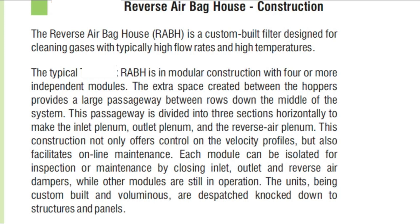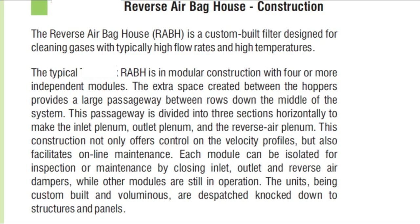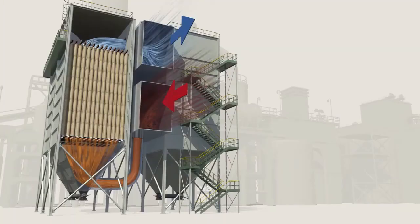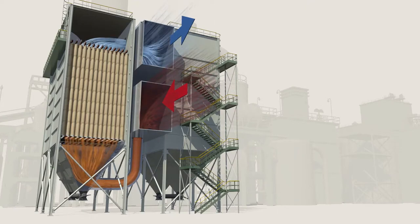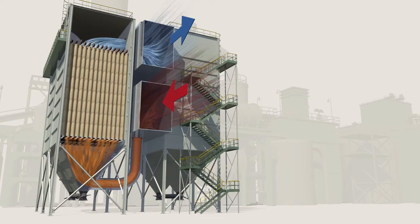This passageway is divided into three sections horizontally to make the inlet plenum, outlet plenum, and reverse air plenum. This construction not only offers control on the velocity profiles but also facilitates online maintenance. Each module can be isolated for inspection or maintenance by closing the inlet, outlet, and reverse air dampers while other modules are still in operation. That is the advantage of RABH over a standard bag filter.